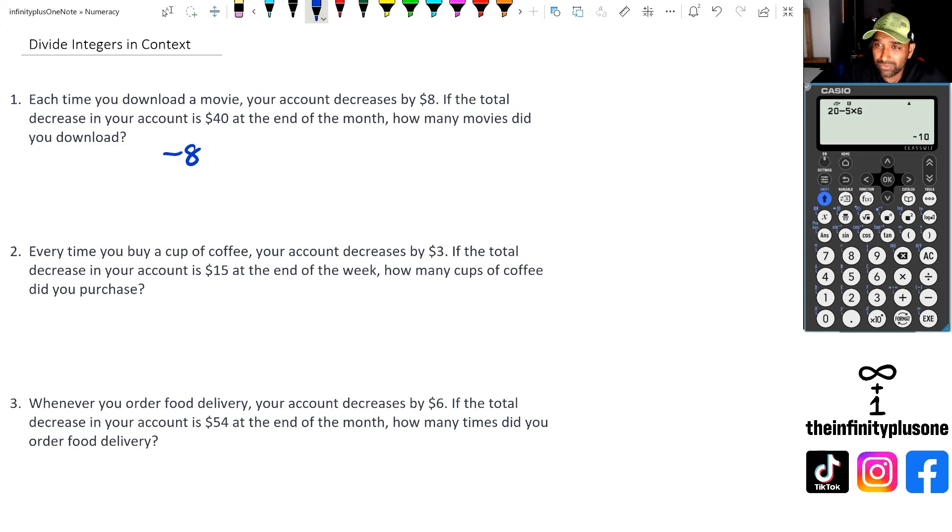And the total decrease in your account is negative 40 at the end of the month. If it's decreased, then we say that it's going to be negative 40. So we want to figure out how many movies did you download. So negative 40 divided by negative eight is equal to five.